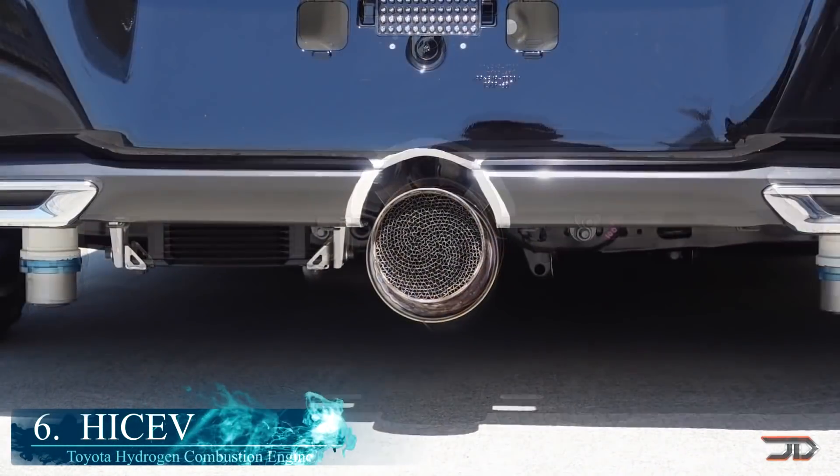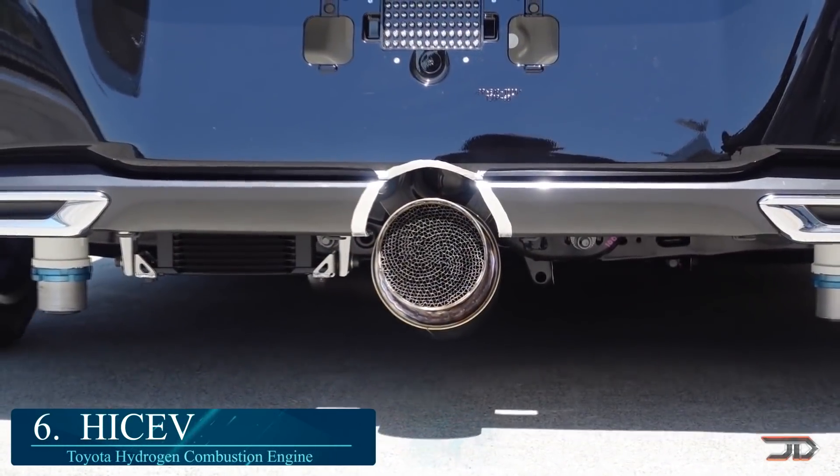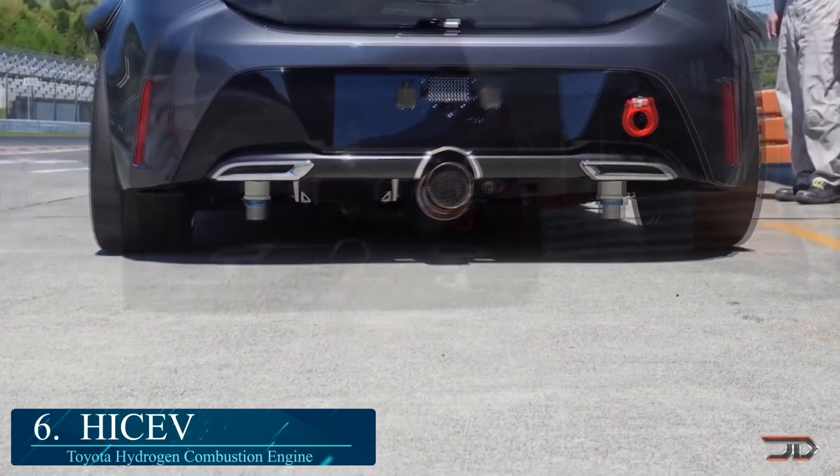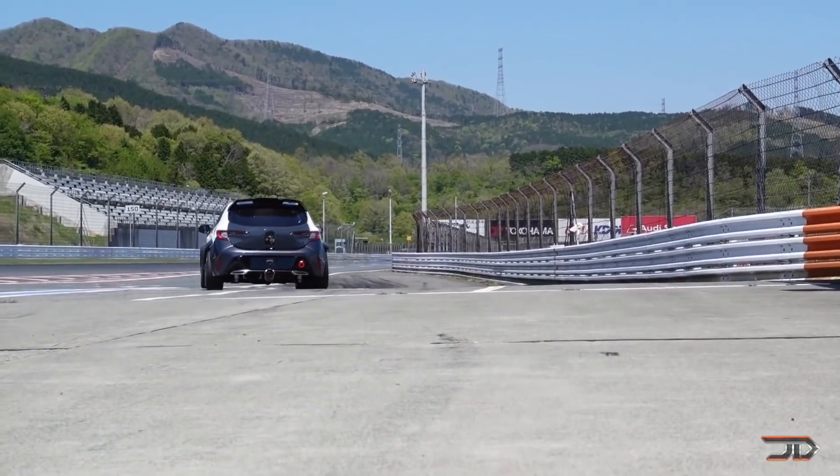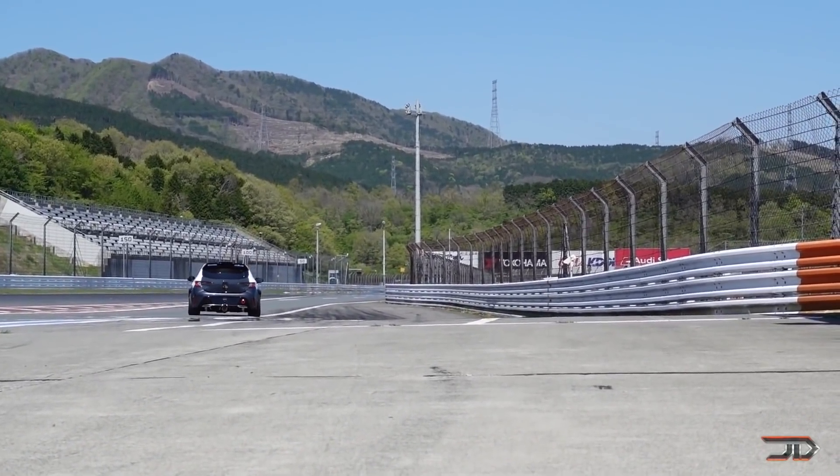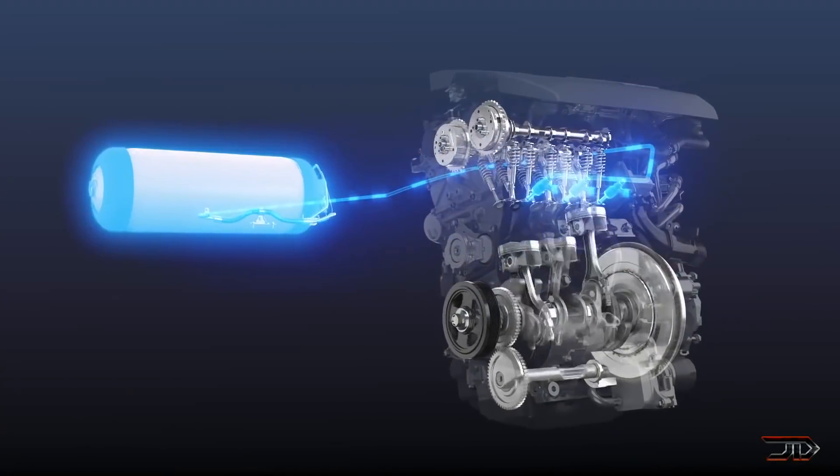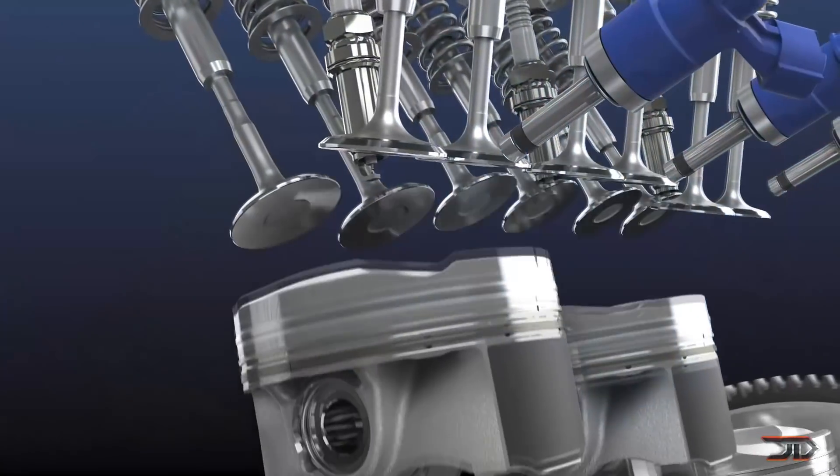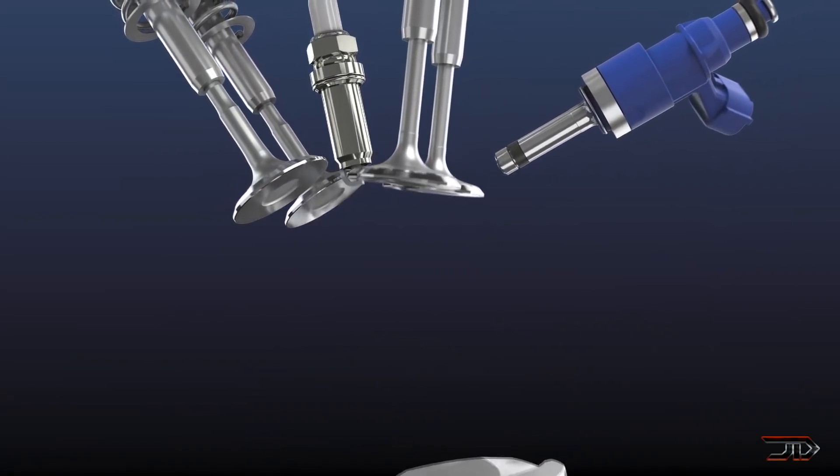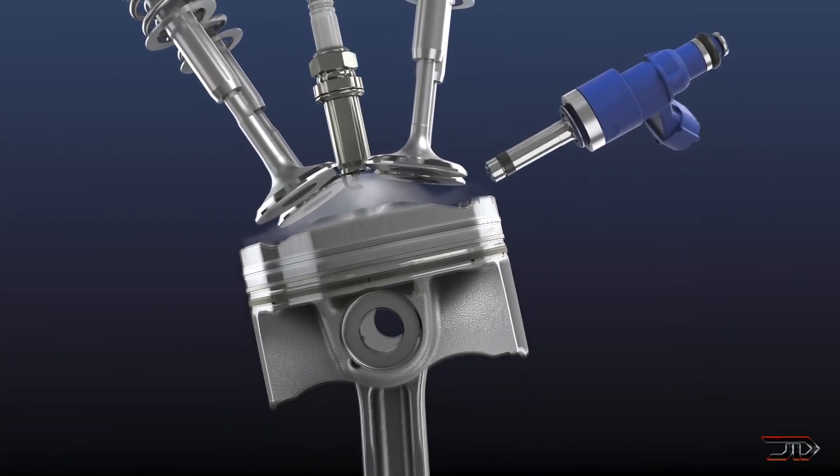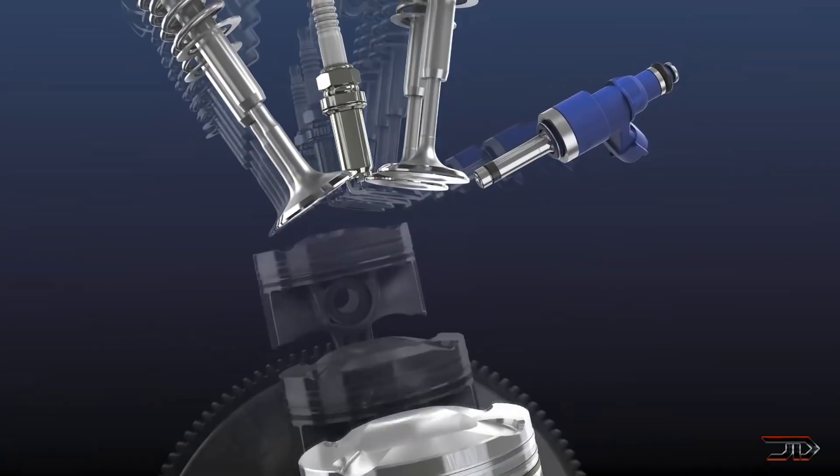At number 6, the Hydrogen Engine. It is no secret that Toyota is leading the forefront on hydrogen-powered vehicles. Their latest innovation ditches the fuel cell altogether and utilizes hydrogen as a direct fuel source.